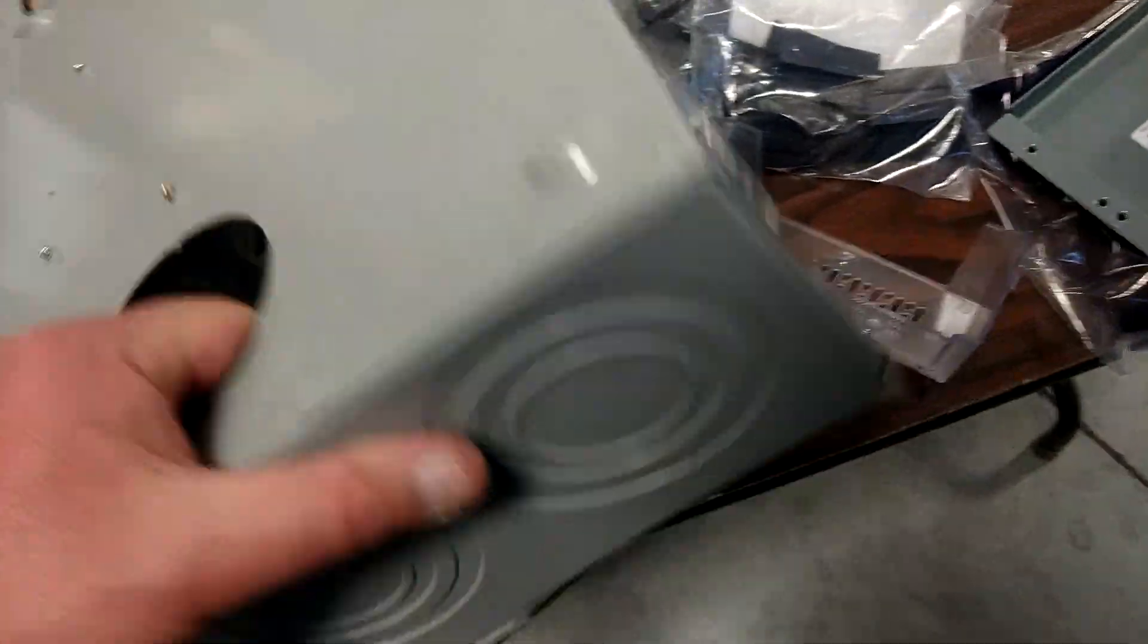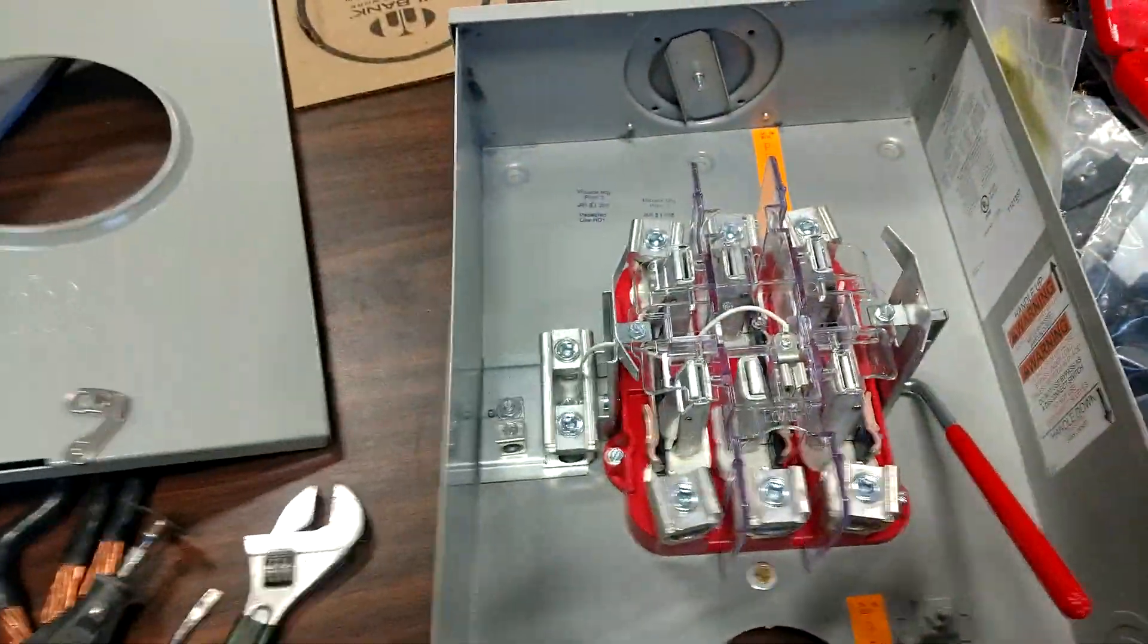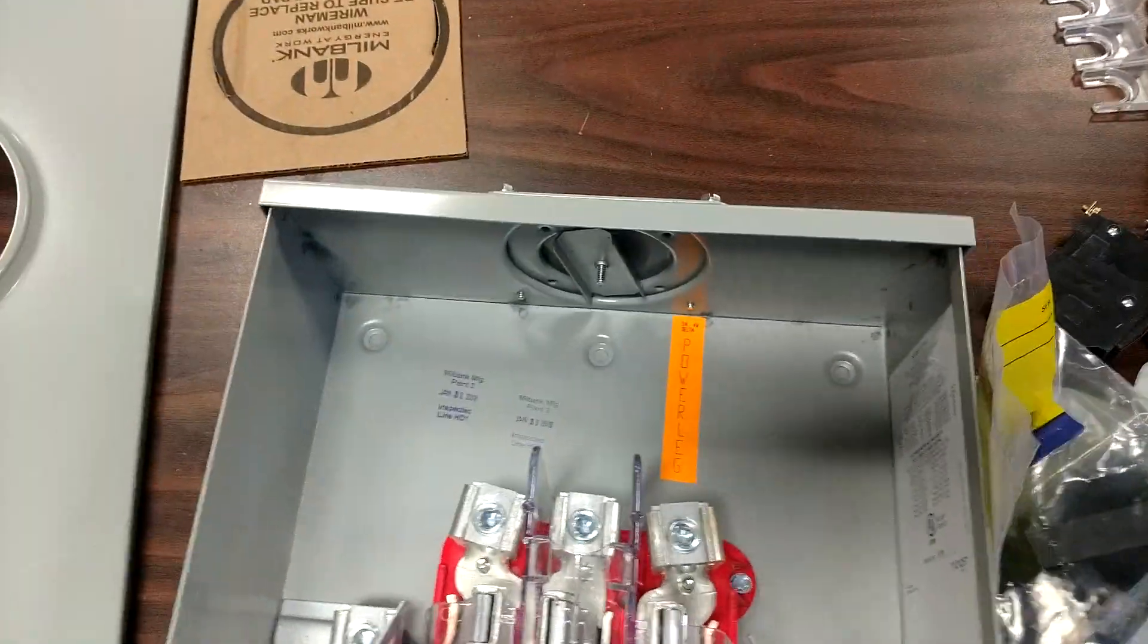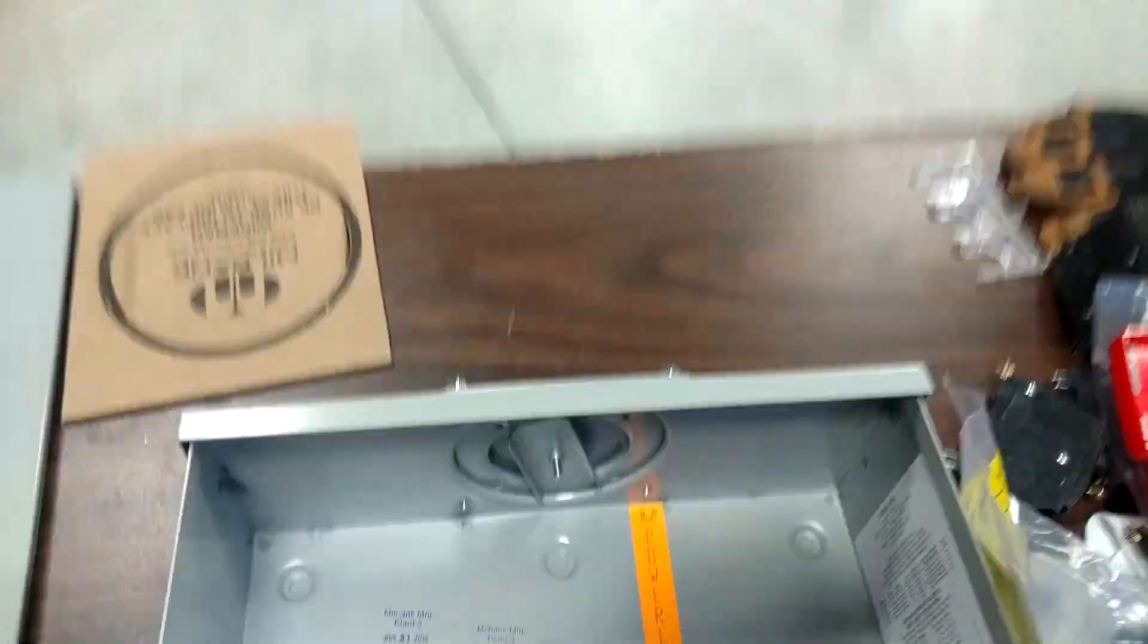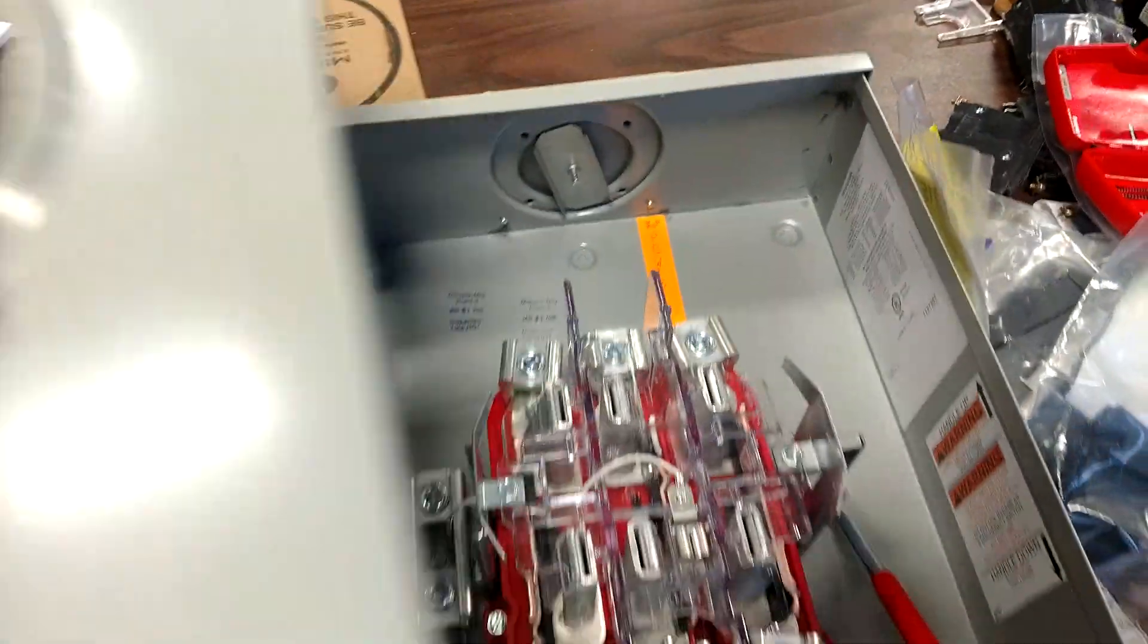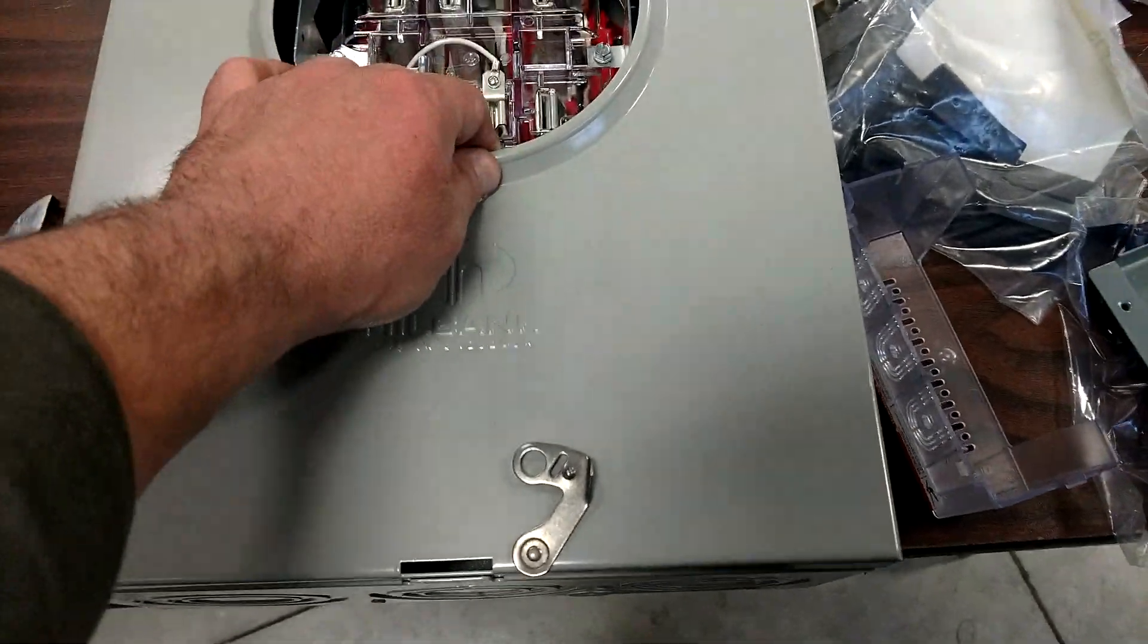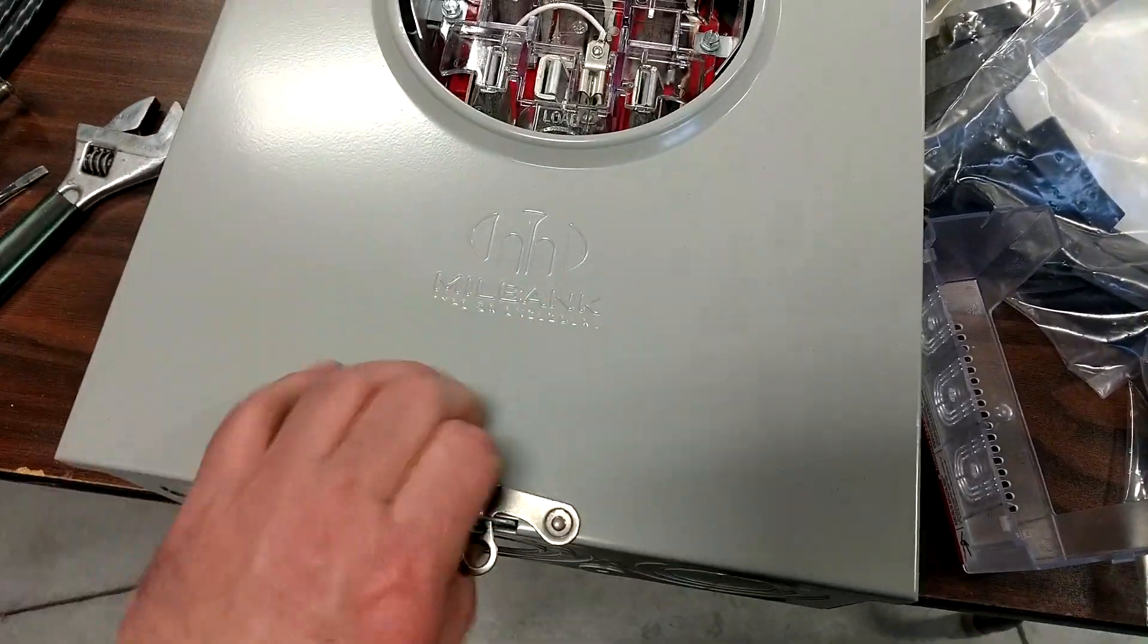On the business end of it, this is what it looks like. The inside of the meter socket - I'm going to be feeding this from underground, so I got the blank hub on the top. This cover goes in like so and latches down.